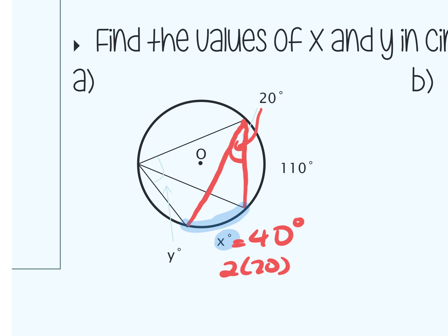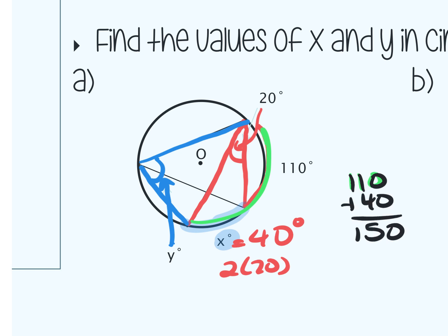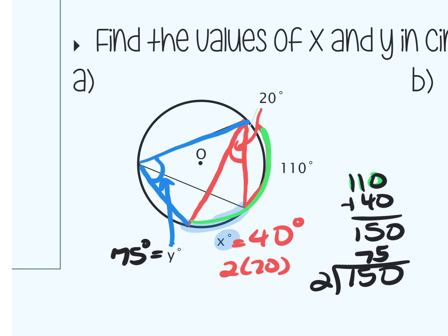To find y, I use the measure of an inscribed angle theorem. Angle y is formed by chords whose intercepted arc includes the 40 degree arc we just found and the 110 degree arc already given. Adding 110 and 40 gives 150. Dividing by two gives angle y equal to 75 degrees. The theorem used is the measure of an inscribed angle theorem.